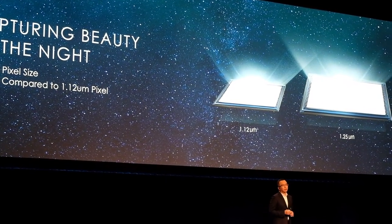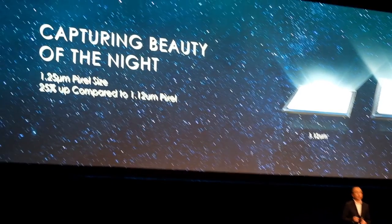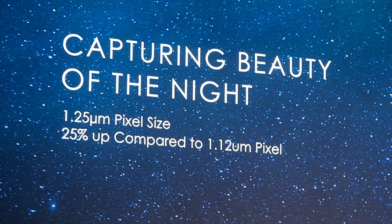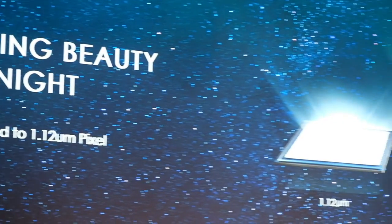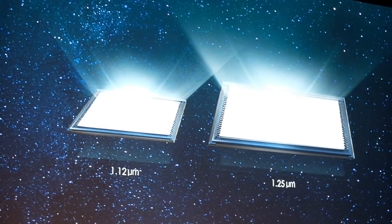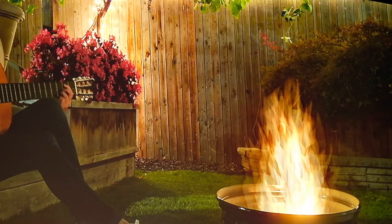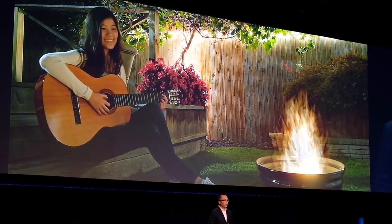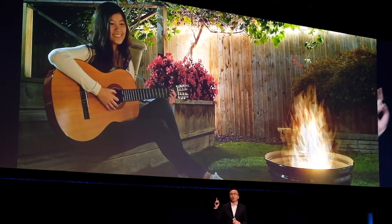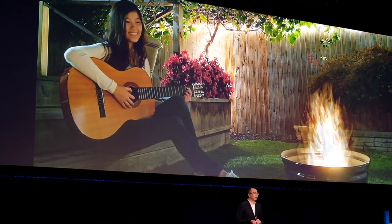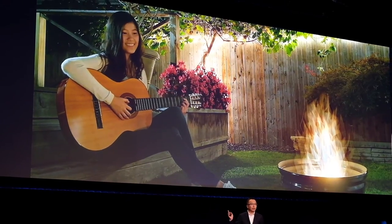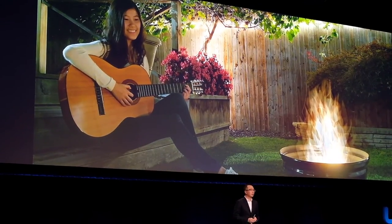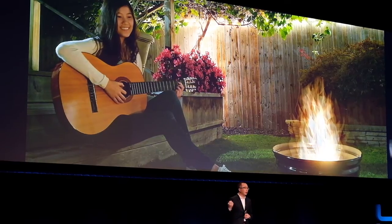On the Honor 6X, we use 1.25 micrometer pixel size — the same size typically used in smartphones. With the Honor 6X you can take a very good night view. For example, a girl is playing guitar. Using the 14-second super light mode, you can see the girl, the guitar, the fire, the fans, and even the toy — everything is so clear, with incredible detail.